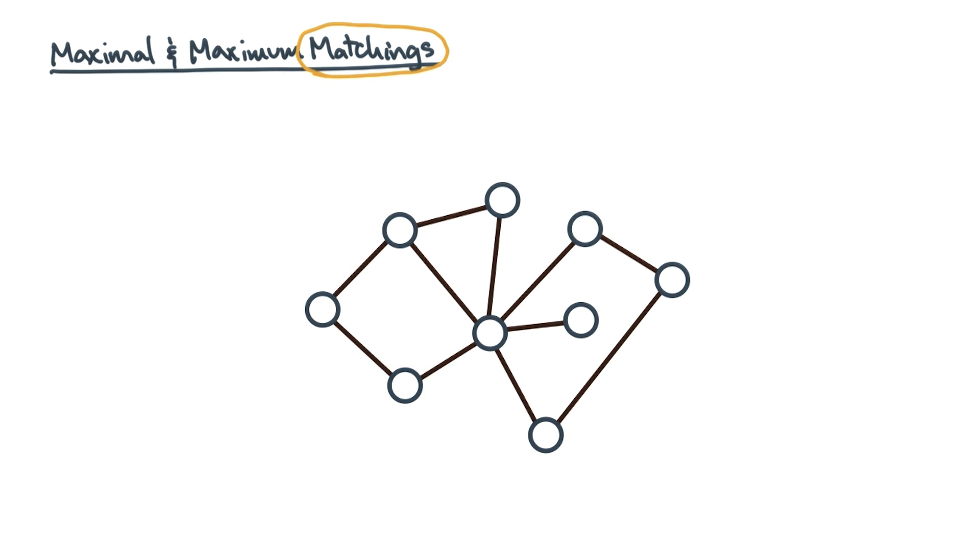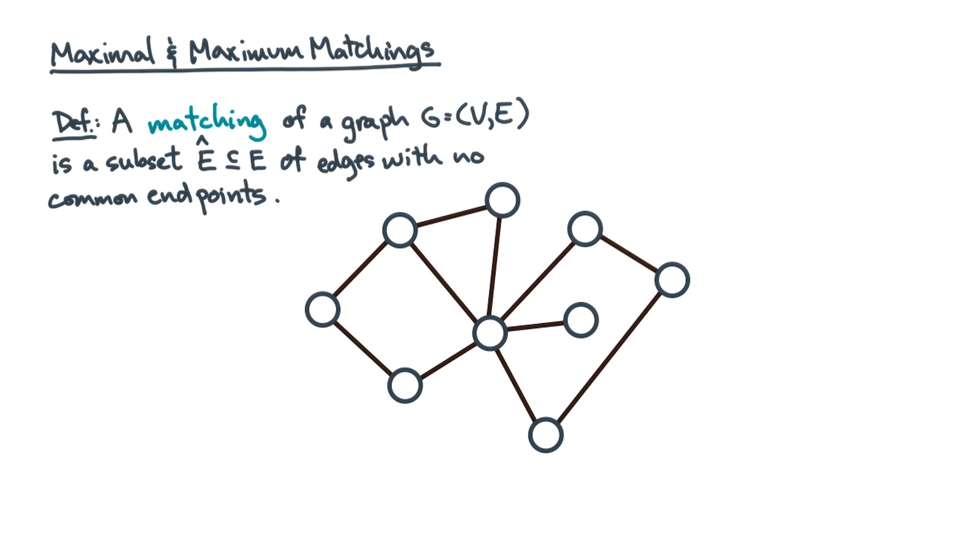So what's that? Here's a formal definition. A matching of a graph is a subset of edges such that no two edges have a common endpoint. It's basically an independent set, but for edges as opposed to vertices.